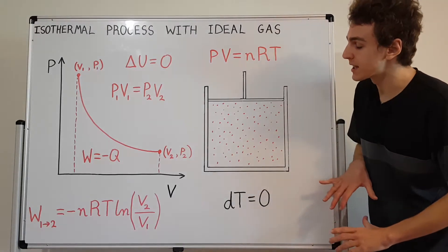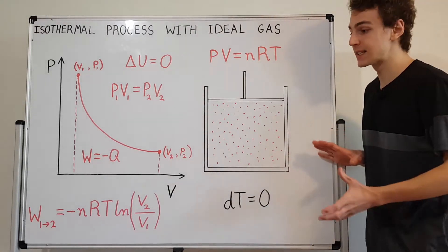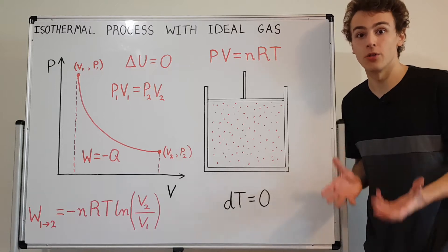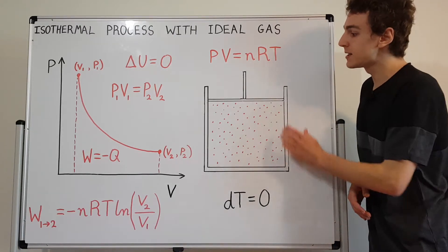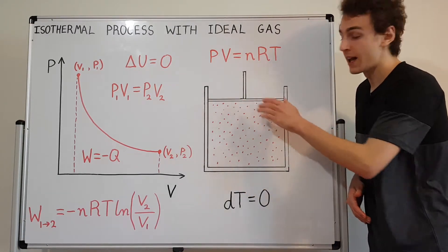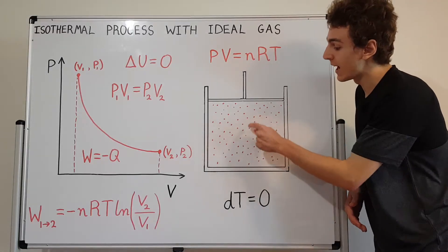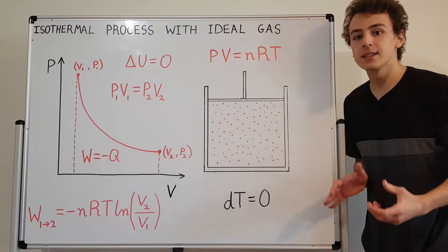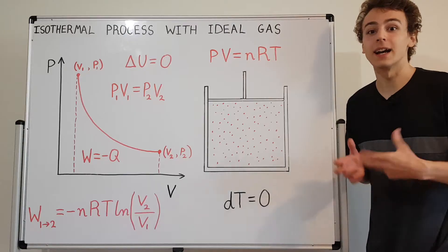First let's have a look at what this looks like in the real world. What is a realistic system that undergoes an isothermal process? This container over here has a piston and inside the container there is an ideal gas or at least a gas that can be approximated ideally.